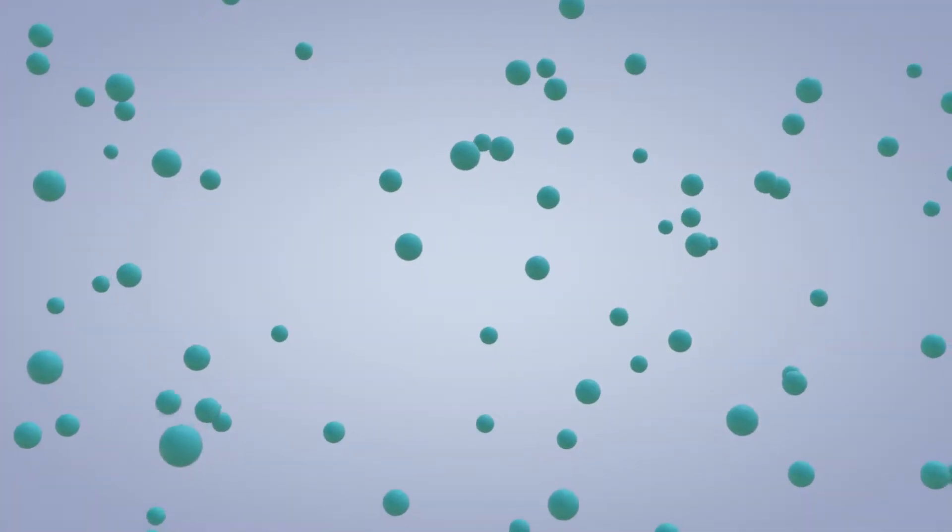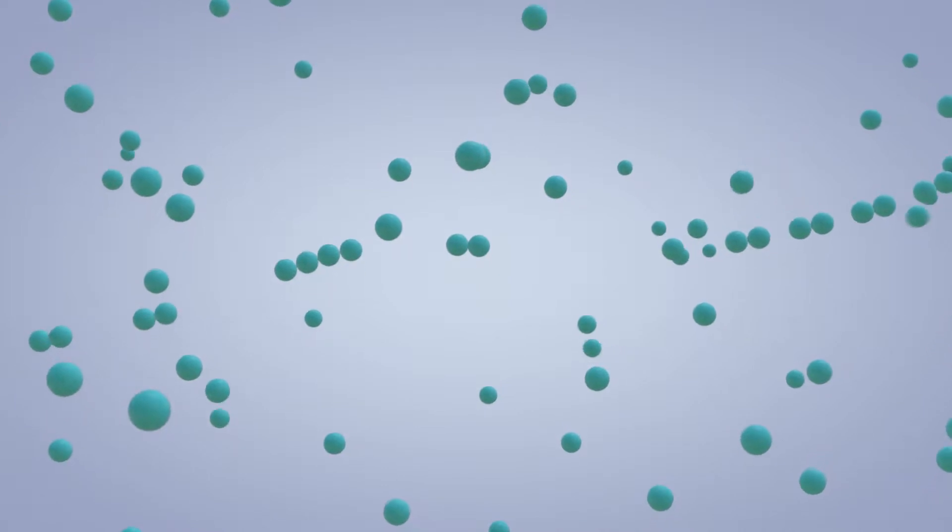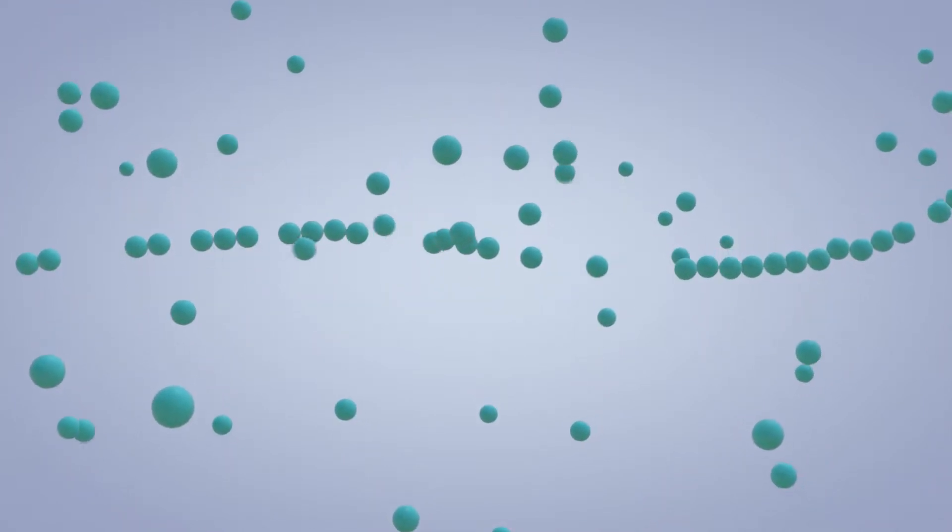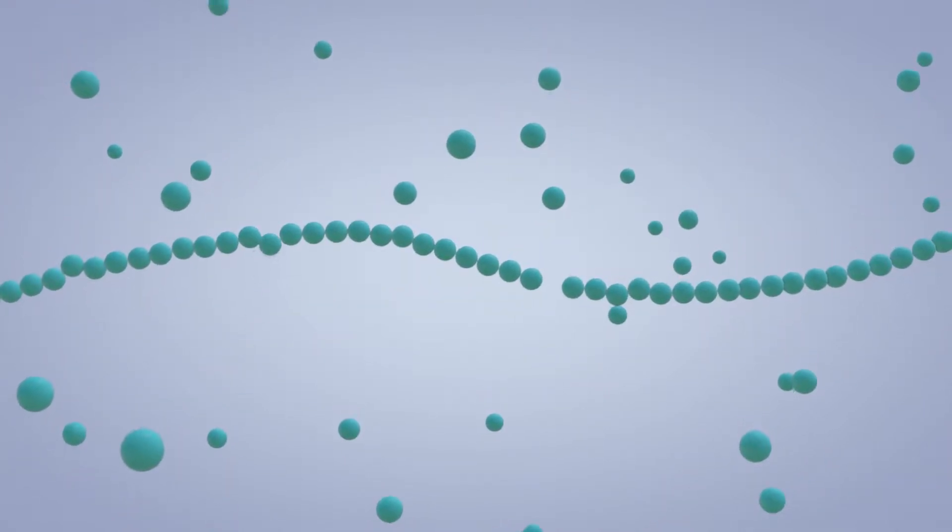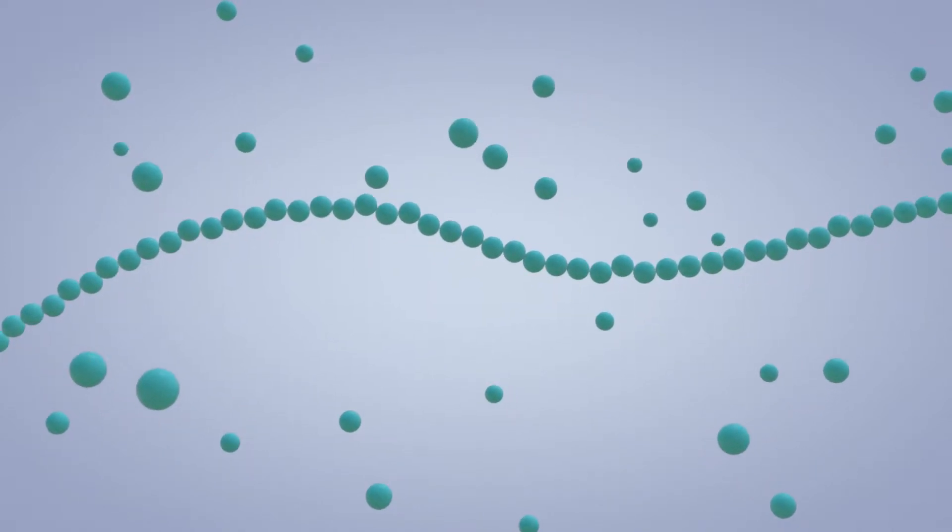Every polymer first starts out as a bunch of monomers, or little building blocks that are all the same. A polymer is a big, long molecule made of many repeating monomers.